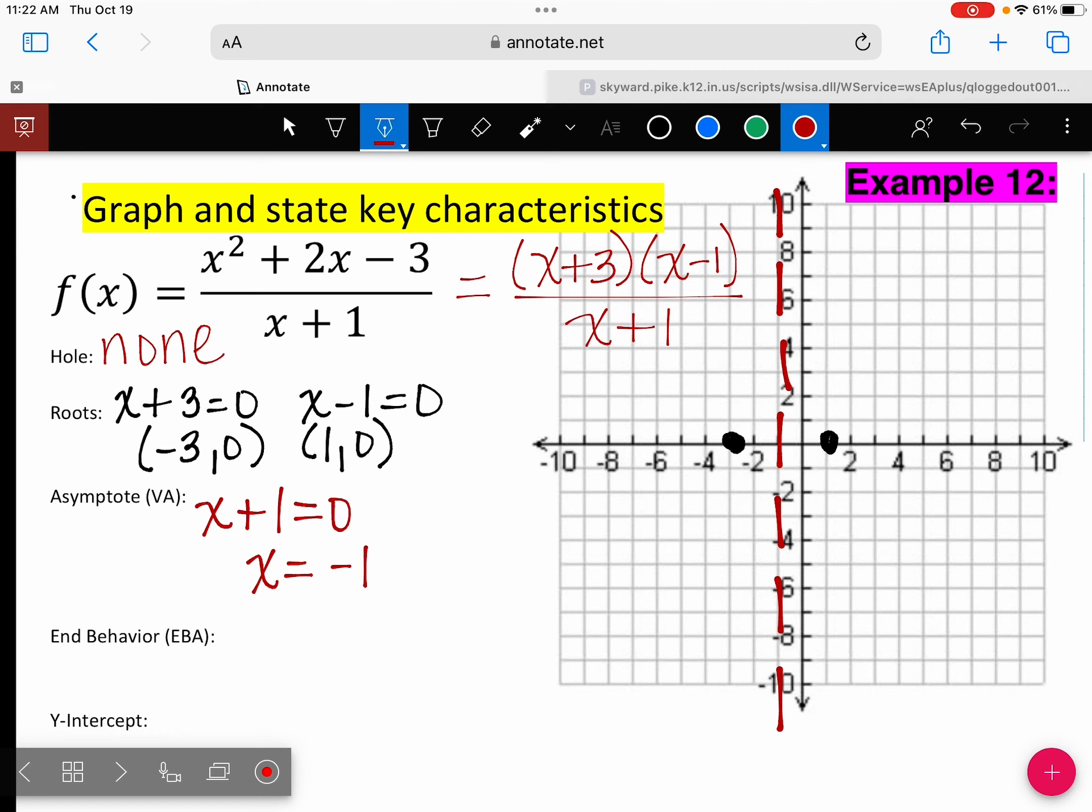So is this going to be top heavy, bottom heavy, or balanced? Top heavy. So what does that mean about your end behavior? Is it going to be horizontal or is it slanted? Slanted. So we have a slanted asymptote. And you need to do synthetic division. So to do your synthetic division, you take your denominator, set it equal to zero. So your vertical asymptote would be a negative 1. Put that on the outside. And then the coefficients of my numerator are 1, 2, and negative 3. Go ahead and do synthetic division to come up with your equation.